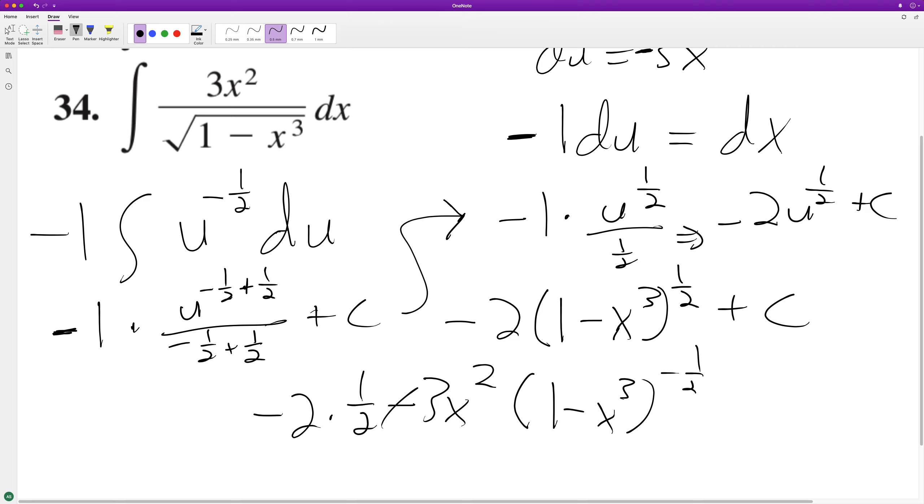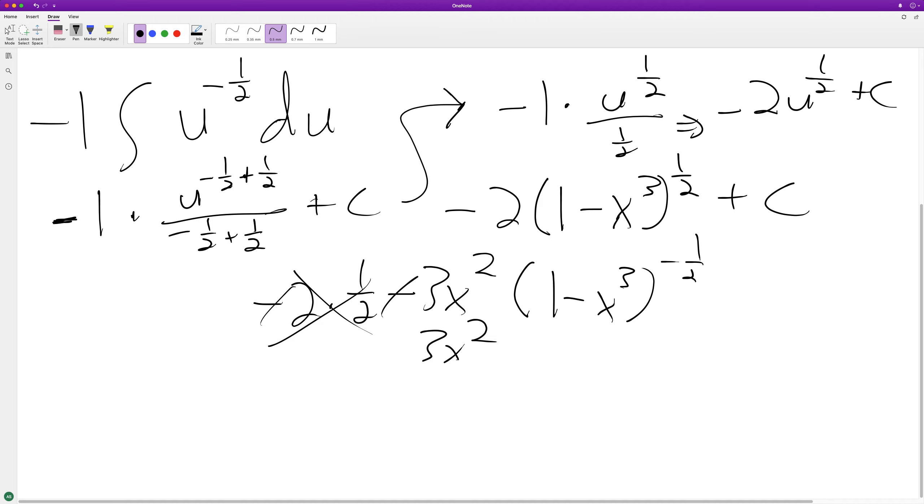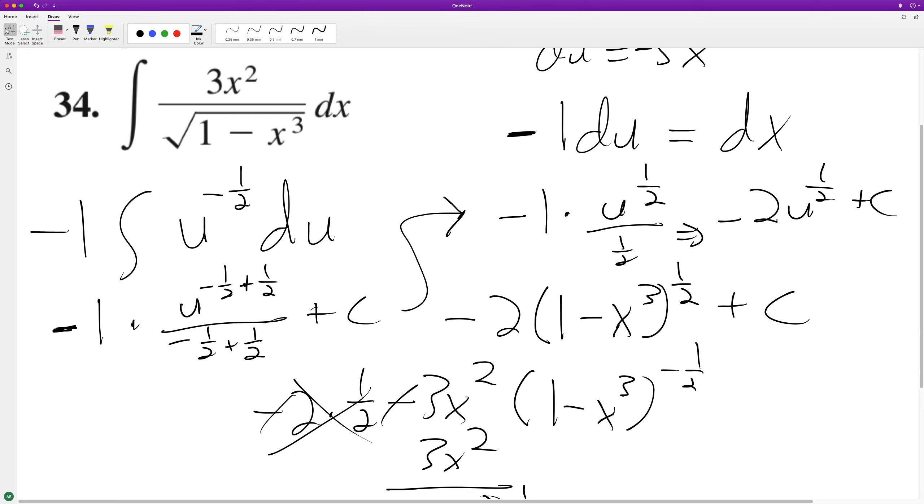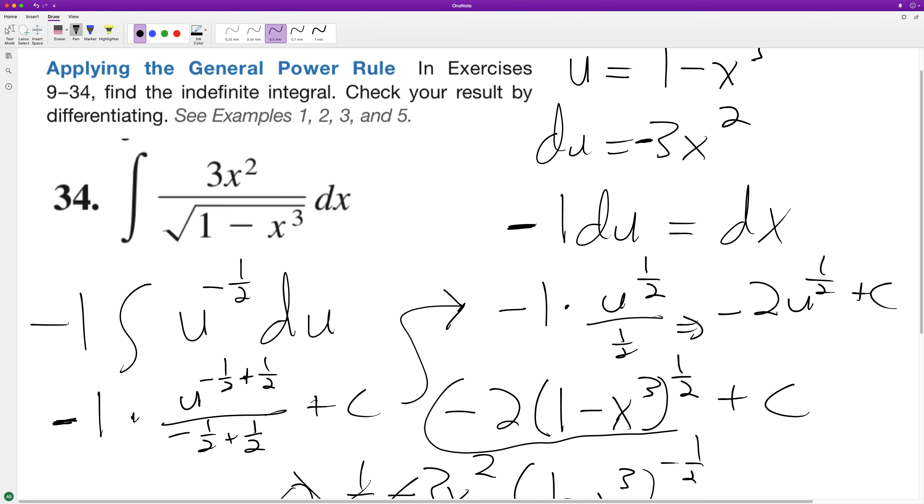Times 1 minus x cubed raised to the negative 1 half. So the negatives cancel off and these 2s cancel off, and we're left with 3x squared. And we can rewrite this whole quantity here as 1 minus x cubed raised to the 1 half for the square root. And because that matches up, that means that this integration right here is correct.